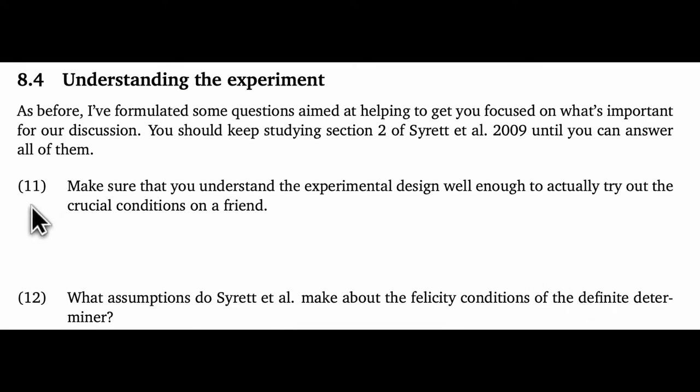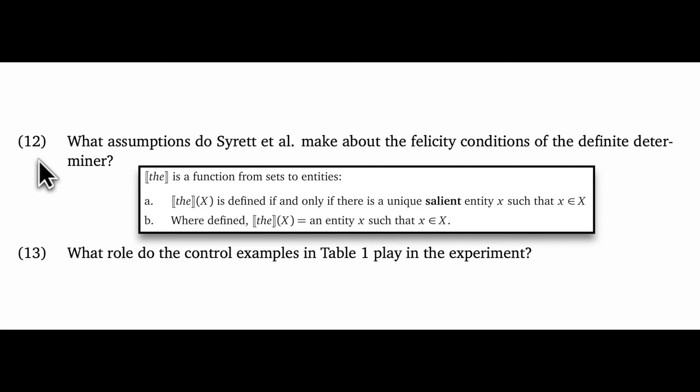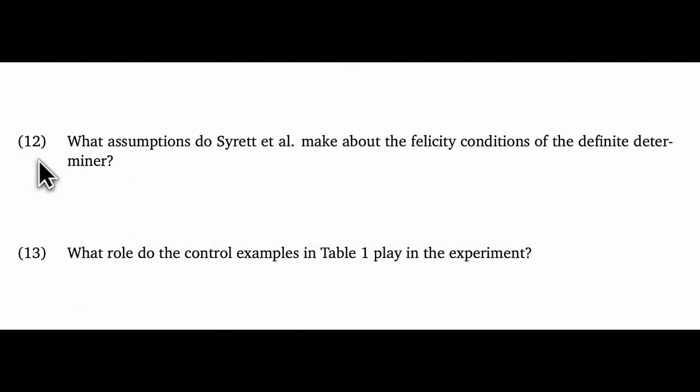Maybe the most vital item is the first one, which isn't a question but rather a goal. Just make sure that you understand the design well enough to actually try out one of the crucial conditions on a friend, say. Since we did a version of the experiment together, you're probably already all set here. But you might pay special attention to the protocols that Syrett et al. used for children because they're somewhat different from our adult design. Second question. What assumptions do the authors make about the felicity conditions of the definite determiner? The assumptions seem totally in line to me with the view we've taken on definite descriptions in the context of our theory of presuppositions and presupposition accommodation. But still, make sure you can articulate an answer here because it's crucial to understanding the logic of the experiment.